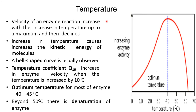The velocity of an enzyme reaction increases with increase in temperature up to a maximum and then declines. Increase in temperature causes an increase in the kinetic energy of the molecules. A bell-shaped curve is usually observed. The temperature coefficient Q10 is the increase in enzyme velocity when the temperature is increased by 10 degrees centigrade. The optimum temperature for most enzymes is 40 to 45 degrees centigrade.